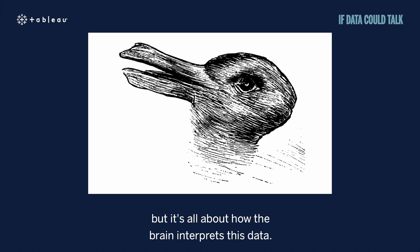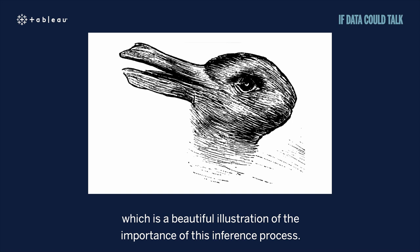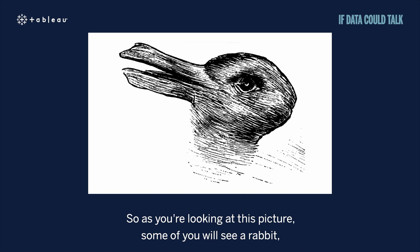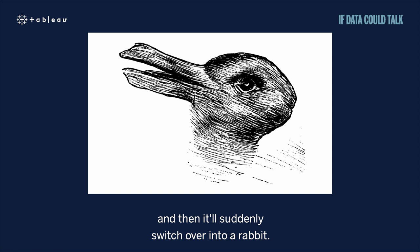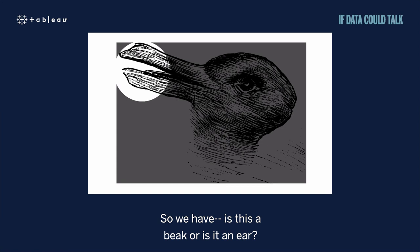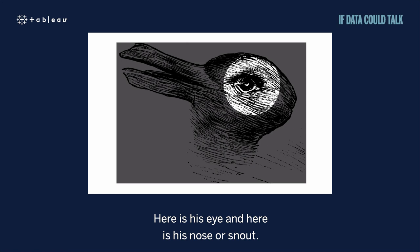The duck-rabbit illusion is a beautiful illustration of this inference process. As you look at this picture, some of you will see a rabbit, others will see a duck. The image can switch between the two. For those who can't see it: if you want to see the rabbit, these are the ears, this is the eye, and here is the snout. If you want to see a duck, here is the eye and here is the duck's beak.